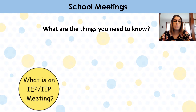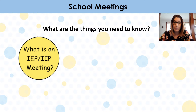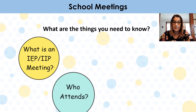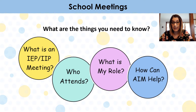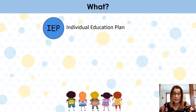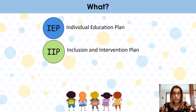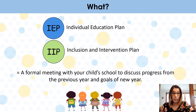So what are the things you need to know? First we're going to talk about what an IEP or IIP meeting is, who usually attends these meetings, what is your role at these meetings, and how can AIM help. IEP stands for Individual Education Plan, and IIP stands for Inclusion and Intervention Plan. Both of these terms are used interchangeably in schools within Saskatoon, and both mean a formal meeting with your child's school to discuss progress from the previous year and to make new goals for the new year.